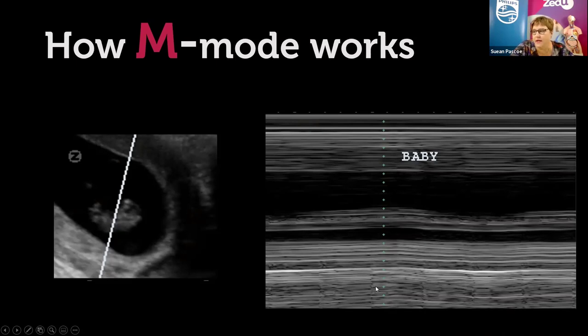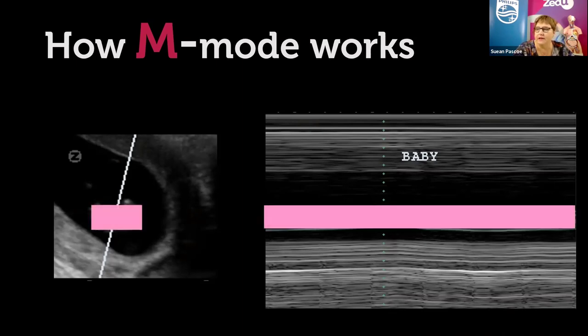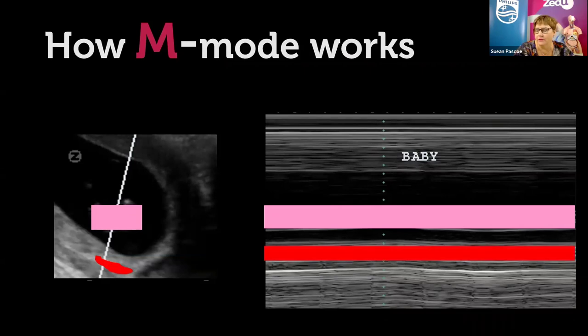Sometimes an M-mode trace looks like two heartbeats — you can see one heartbeat in the fetal tissue band and another lower down. What you're seeing is the fetal heart trace on the upper band, while the lower heart trace is probably reflecting blood flow or the pulse in one of the uterine arteries — that's the maternal heartbeat.